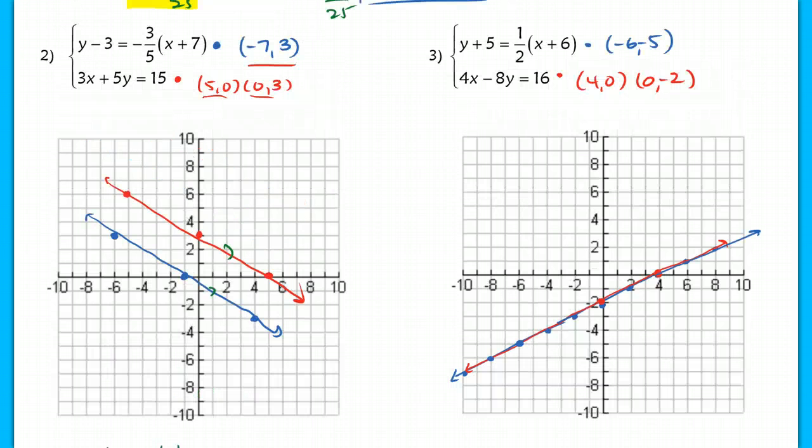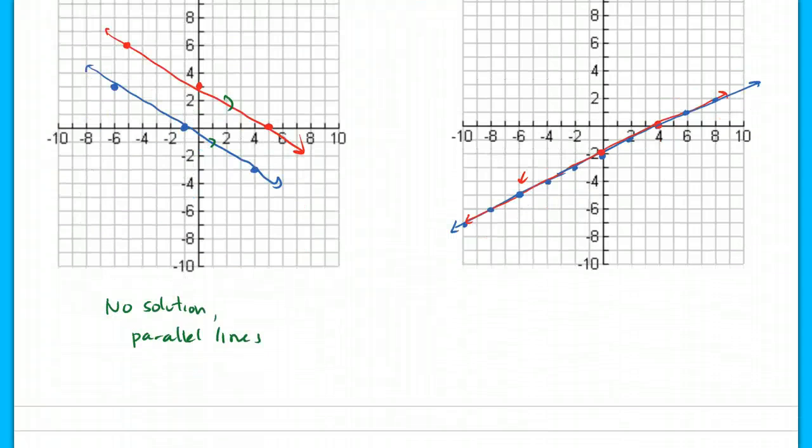Now, in problem number three, when I graphed the blue line, I start at the point negative 6, negative 5, and then I went up 1 and to the right 2, and I got this blue line here. When I graphed the red line underneath it, I ended up with the exact same line. So this would be infinite solutions. I write all points, or I could even write infinite points, on the line, and that particular line in standard form was 4x minus 8y equals 16. Instead of just writing no solution or infinite with an infinite symbol, you're going to write out this explanation here.